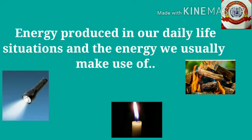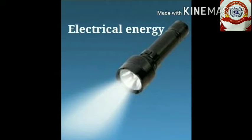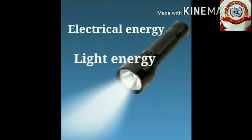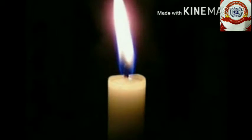Here are some examples we discussed in our previous classes. Which are the forms of energy produced when a torch is lit? Yes, you are right — electrical energy. Electrical energy is converted to light energy, and here we make use of the light energy.